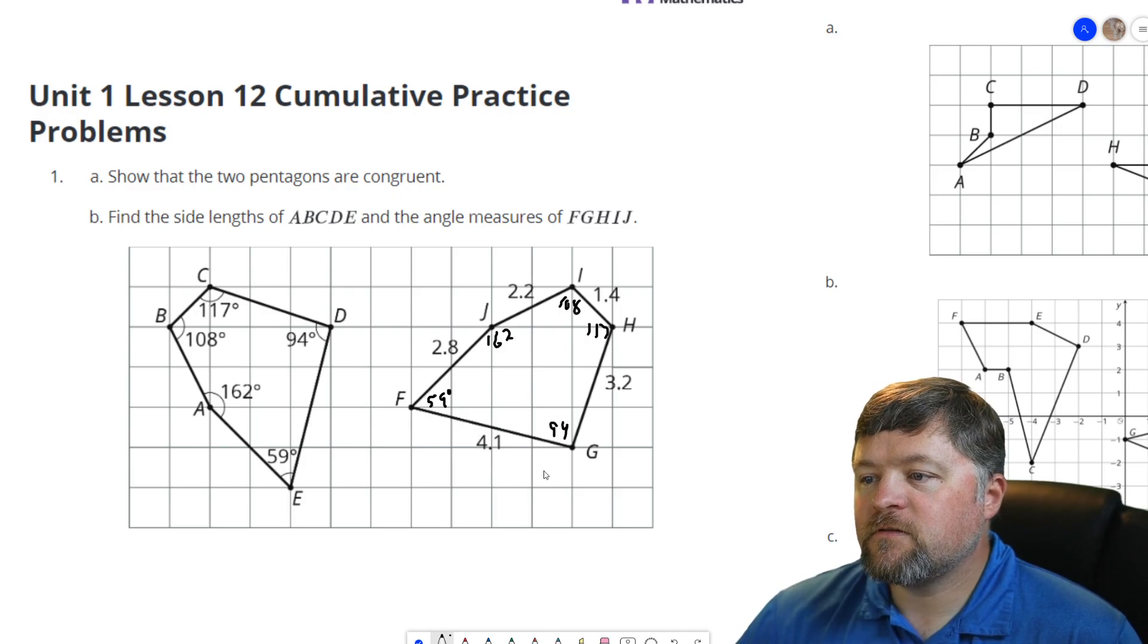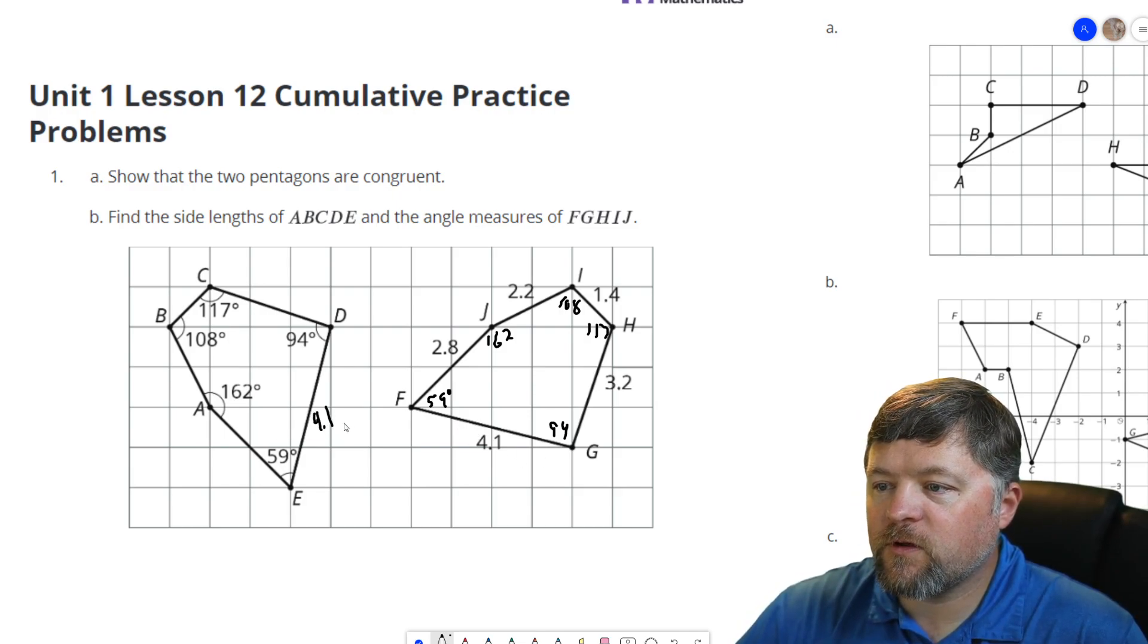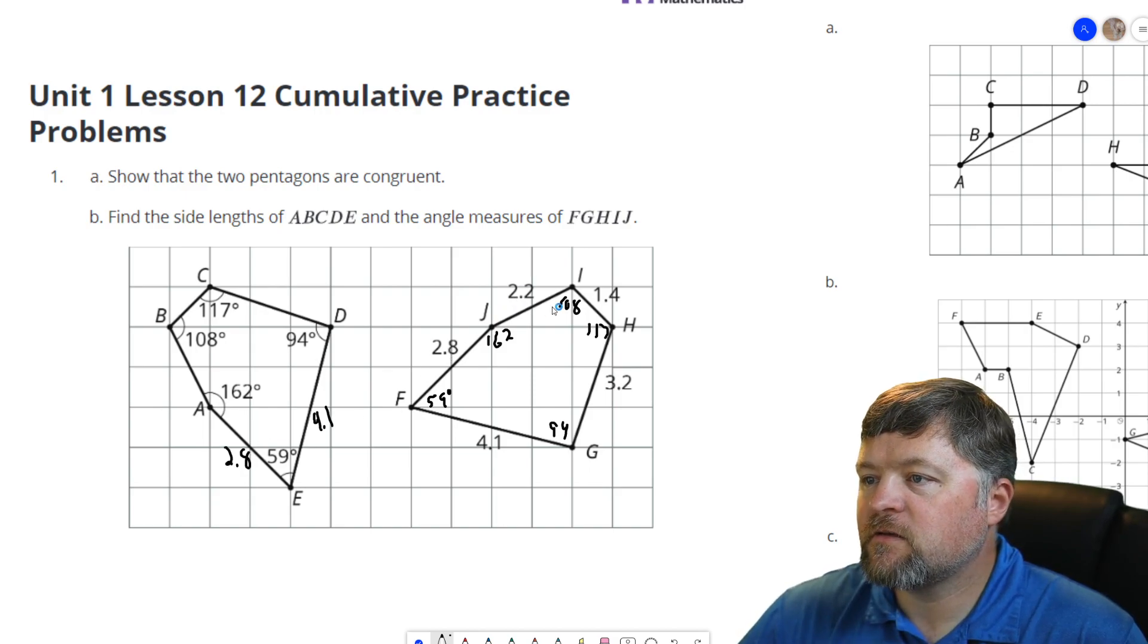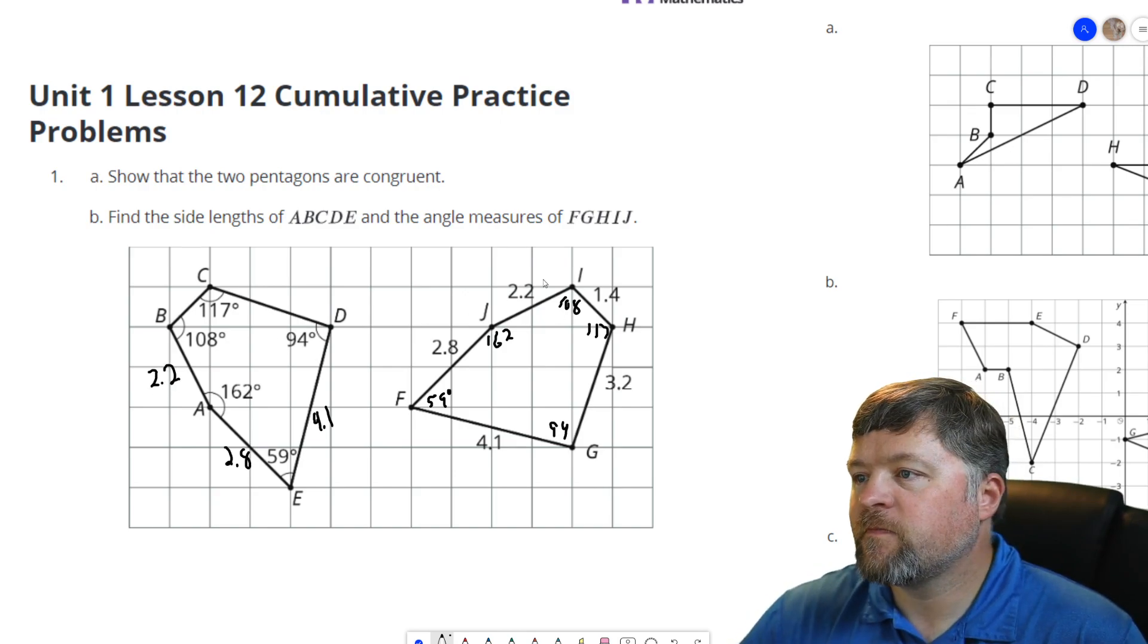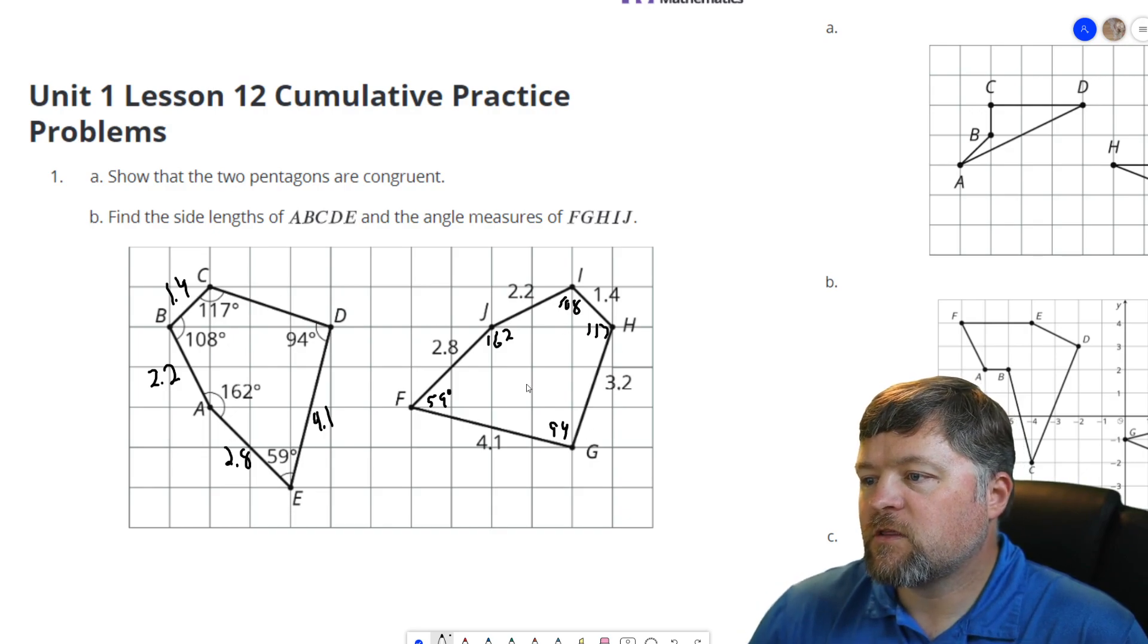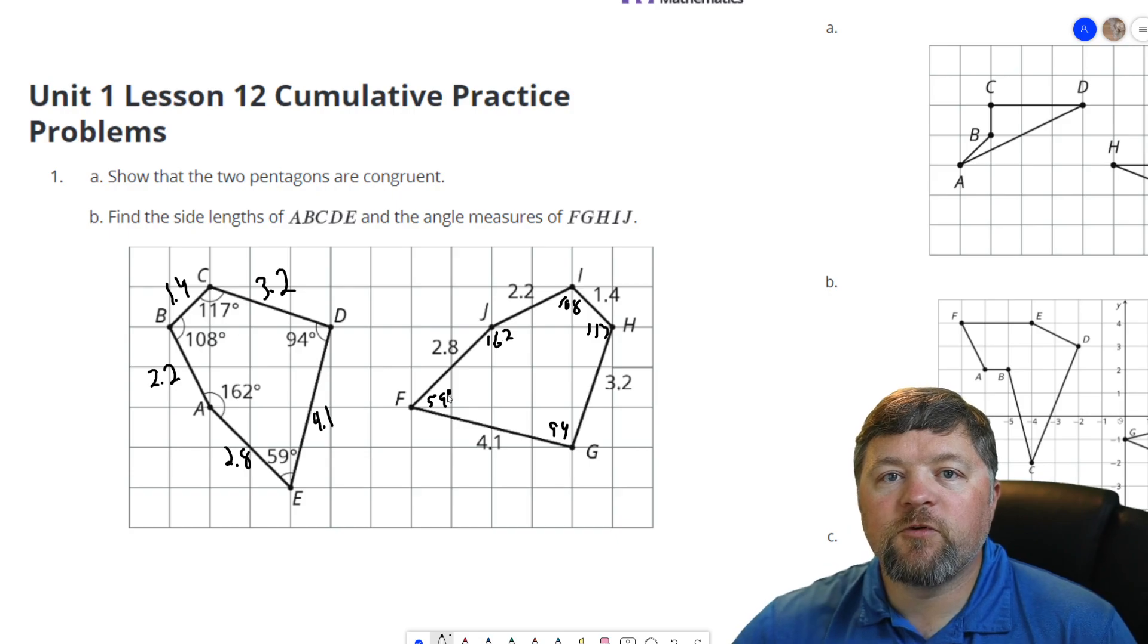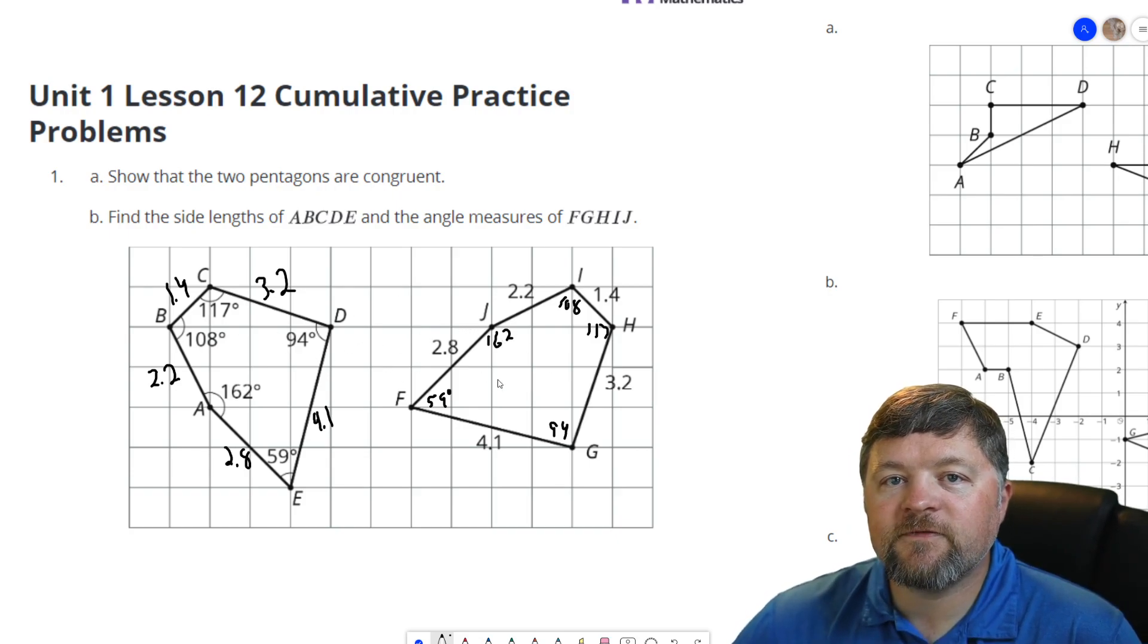Same thing with side lengths. If this is 4.1, this is 4.1. If that's 2.8, that's 2.8. 2.2, 2.2. 1.4, 1.4. 3.2, 3.2. Once we prove the two figures were congruent to each other, all the angles and side lengths have to be the same.